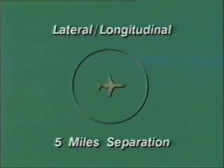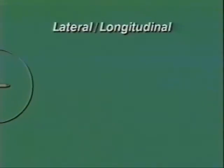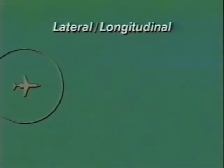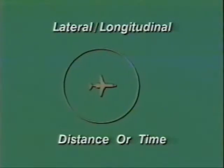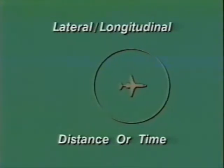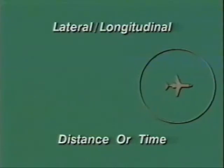Radar minima for longitudinal and lateral separation are five miles of distance between aircraft at the same altitude. Non-radar separation is the spacing of aircraft in accordance with established non-radar minima, when aircraft position information is derived from information on the flight progress strips. Lateral and longitudinal non-radar separation is maintained as distance or time, and the minima vary depending on a number of factors, one of which is the type of equipment on board the aircraft.